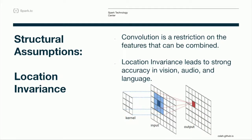Convolutional neural networks restrict the space of features that can be combined to a locality — looking at a particular segment of the image, usually a square. This forces the network to combine things that are locationally close into higher-level things. That allows you to save huge amounts of computation so you can use the exact same feature set over your entire image. Your feature will be a small kernel capturing some aspect of the audio stream or image, and you generalize by sliding that feature filter over the entire image, audio stream, or language representation.